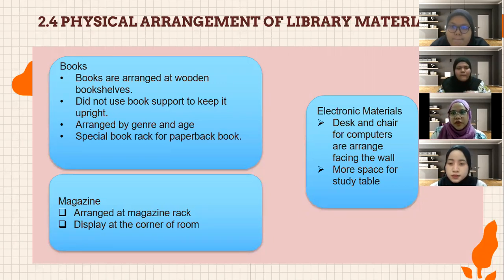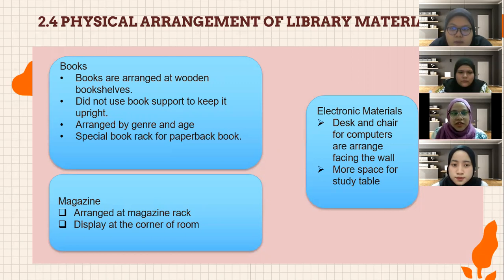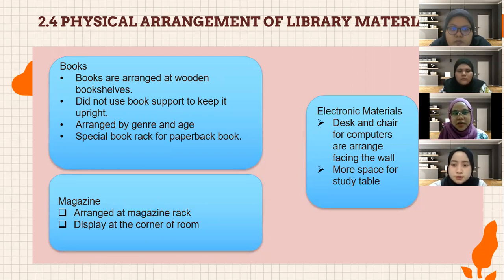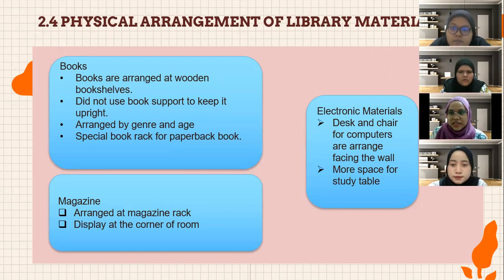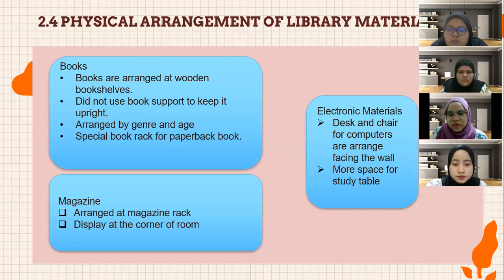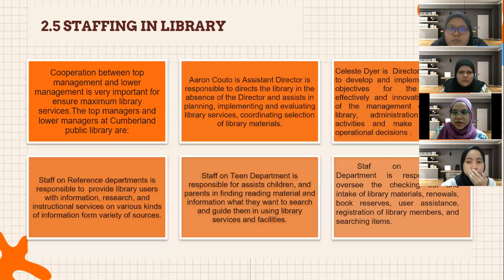Next is the physical arrangement of library materials in the Cumberland library. First, printed books: the books are arranged on wooden bookshelves, but they do not use book supports to keep them upright, so the books look messy. They are arranged by genre and age, and there is a special book rack for paperback books. Second, magazines are arranged on a magazine rack displayed at the corner of the room. Third, electronic materials: desks and chairs for computers are arranged facing the wall so there is more space for study tables.